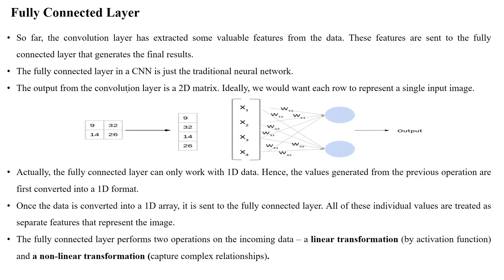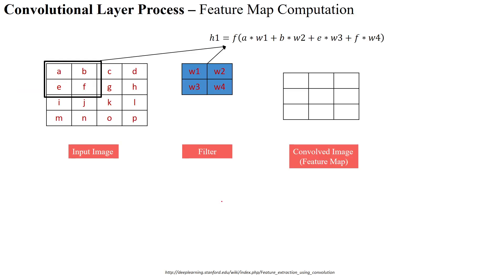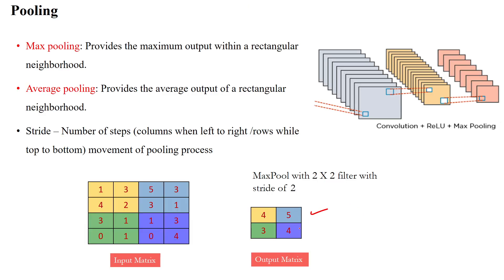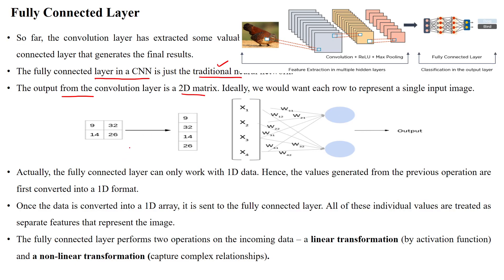We use the fully connected layer by utilizing the extracted information from the convolutional layer. The fully connected layer is like a simple artificial neural network used in the traditional machine learning way. The output from the convolution layer is a 2D matrix. However, the fully connected layer can only work with one-dimensional data.